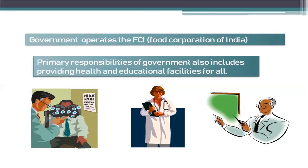When we divide sectors into private and public, understanding the importance of both is very important. The government has set up various universities, colleges, and professional institutions to help the poor achieve education and develop the correct skills.